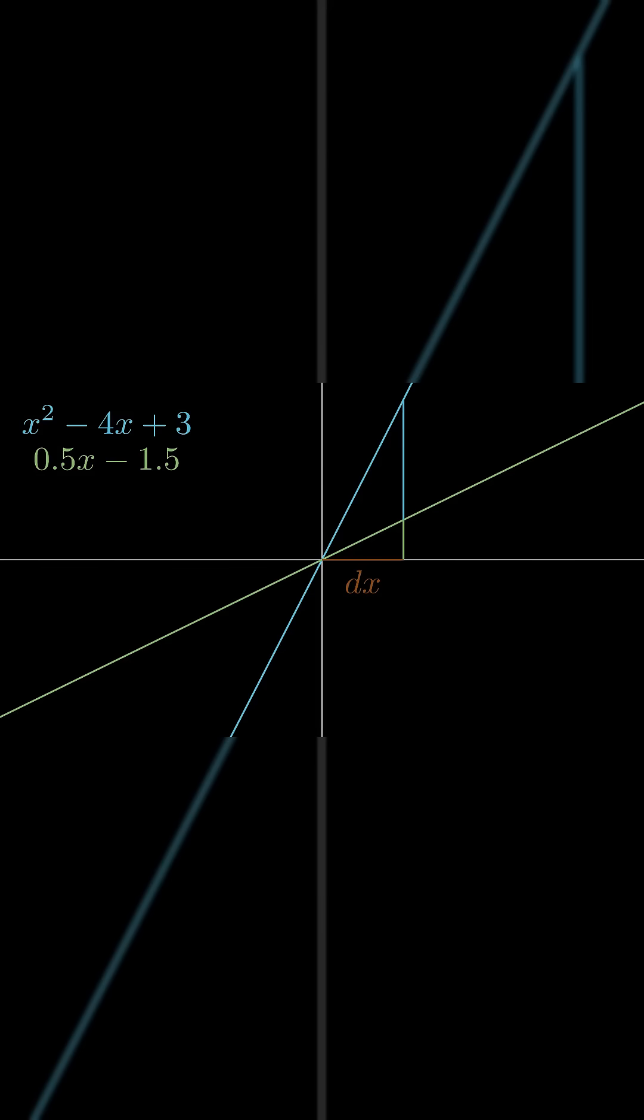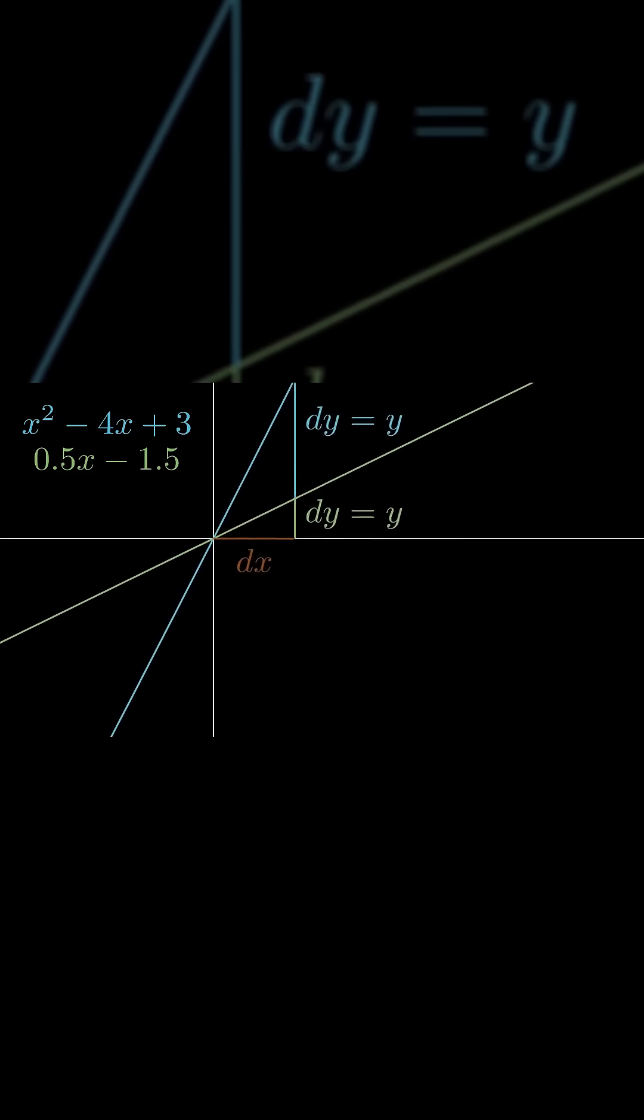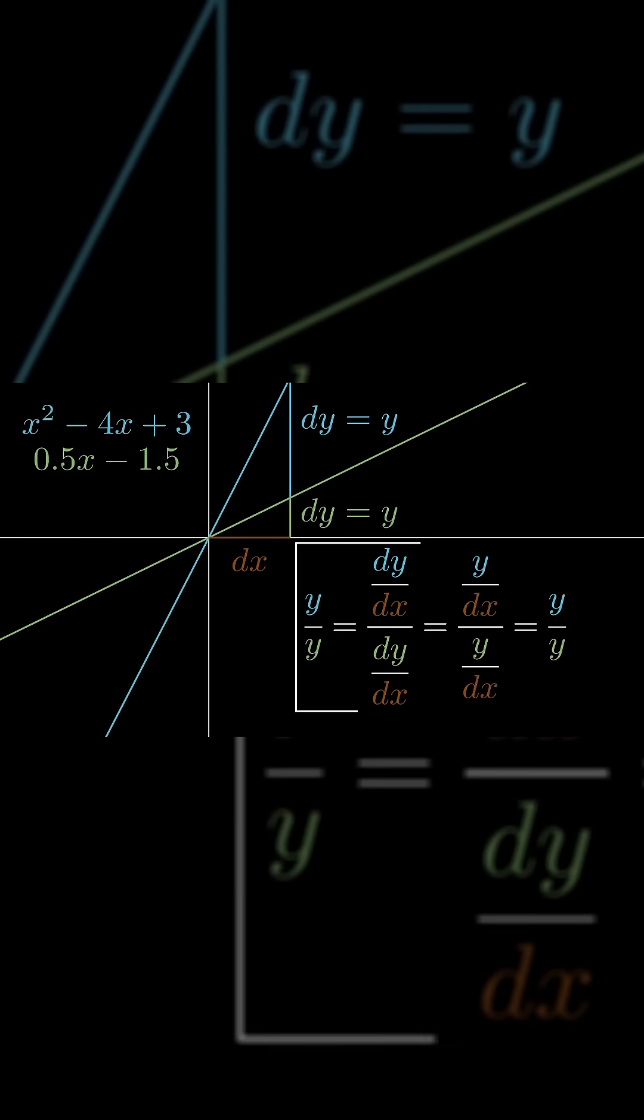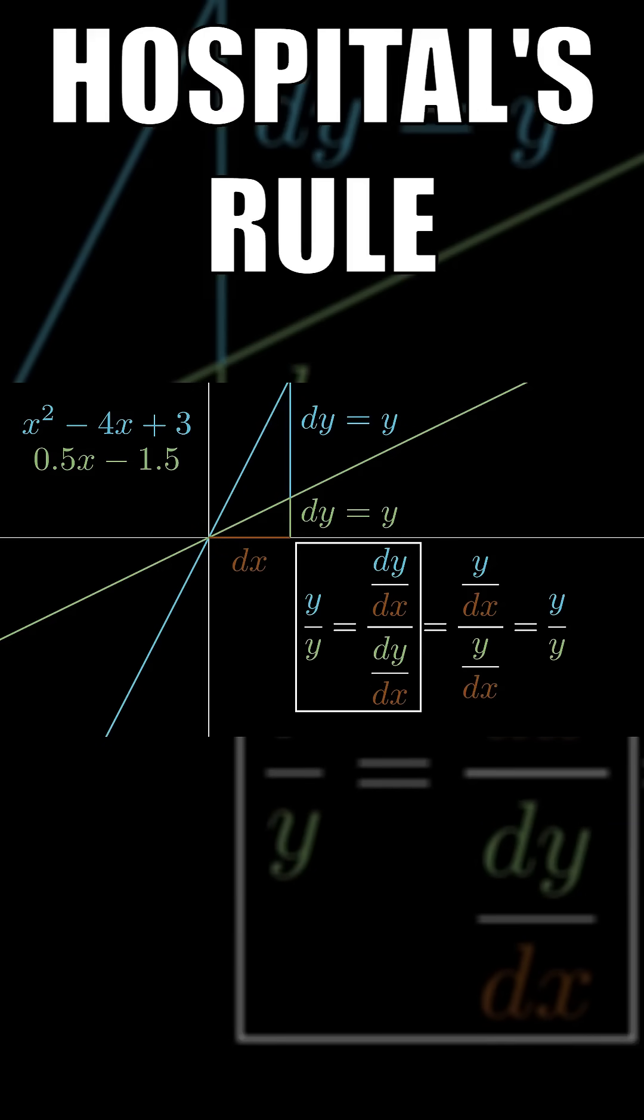Likewise, we will call the amount that each y value increased, dy. In this case, the dy's are equal to their respective y values, because the y values are starting at 0. The slope of either function at this point is its dy divided by dx. Therefore the ratio between the slopes must be equal to the ratio between the y values. This is called L'Hôpital's rule.